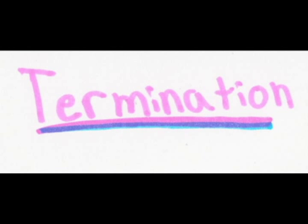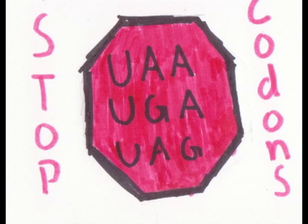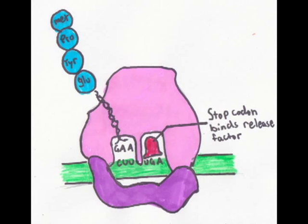Termination is the last and final step of translation. The chain starts at the 5-end and works its way to the 3-end until it reaches a stop codon, UAA, UGA or UAG. These codons have a protein called a release factor which causes an H2O to be attached to the end of a chain and disconnected.